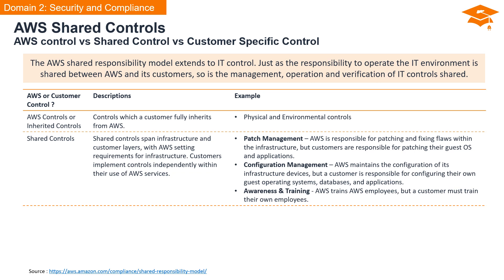Let's break down shared controls with examples. Patch management: AWS takes charge of patching and fixing flaws within the infrastructure; however, customers are responsible for patching their guest OS and applications. Configuration management: AWS maintains the configuration of its infrastructure devices, but customers take the reins for configuring their own guest operating systems, databases, and applications. Awareness and training: AWS trains its own employees, but customers need to ensure their team is up to speed.